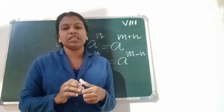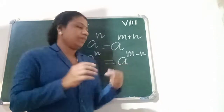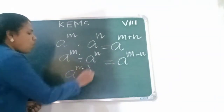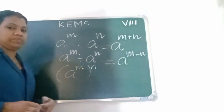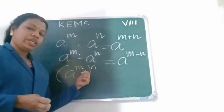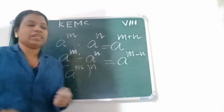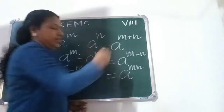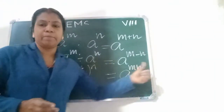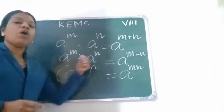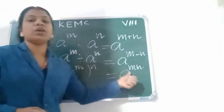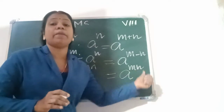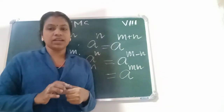Third exponential law: A raised to M, whole raised to N, equals A raised to M into N — that is, A raised to MN. Just multiply the powers.